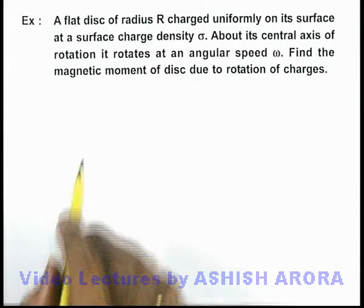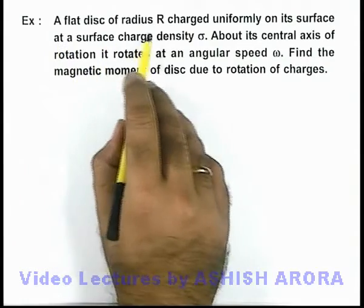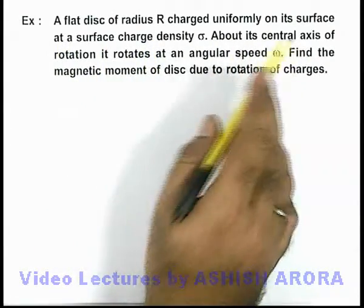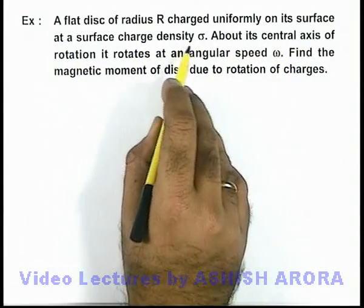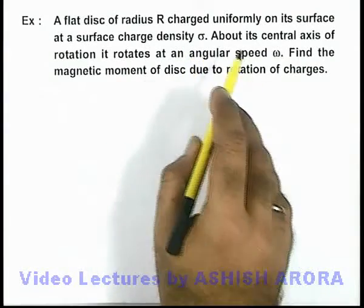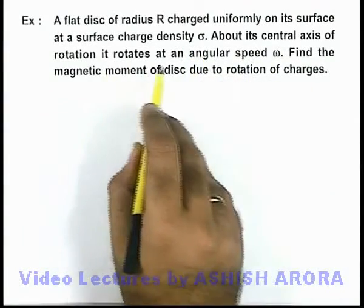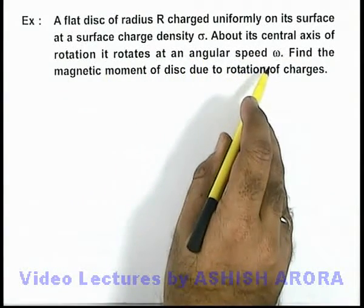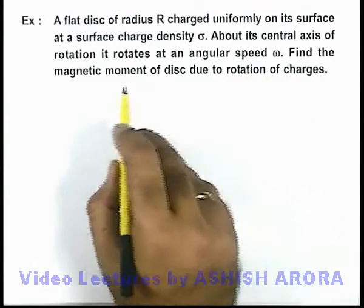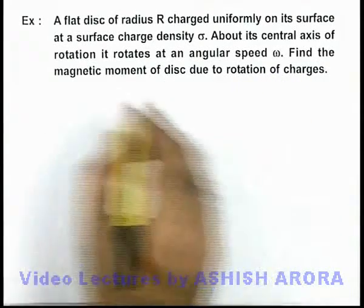In this example we are given that a flat disc of radius R charged uniformly on its surface at a surface charge density sigma, and about its central axis of rotation it rotates at an angular speed omega, and we are required to find the magnetic moment of the disc due to rotation of charges.